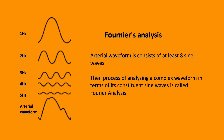The arterial waveform is a complex waveform consisting of at least eight different sine waves, or eight harmonics. Fourier analysis is the process of analysing this complex arterial waveform and breaking it down into each individual sine wave, each with different frequencies.